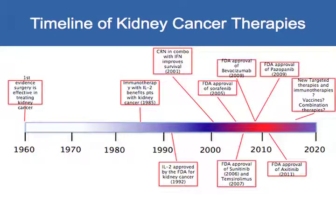We've seen a similar timeline in Dr. Gao's presentation on kidney cancer therapies — from active surgery back in the 1960s, to the adoption of immunotherapy for advanced and metastatic disease, to the advent of targeted therapy with sorafenib in 2005, and now onto newer targeted therapies, immunotherapies, and vaccinations.